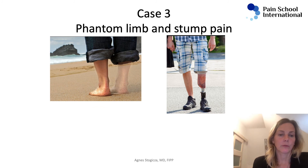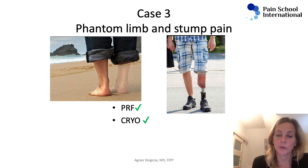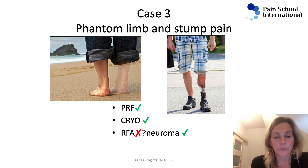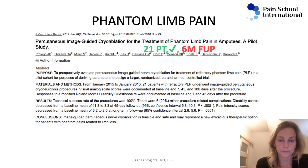When it comes to phantom limb pain and stump pain, the distal portion of the nerve and its function are no longer as relevant. So you could do a lot of things: PRF, but the benefit will probably be short-lived. You could do cryo because you can take away function fully. You would consider radiofrequency, but knowing it can cause complete coagulation of the nerve and possible neuroma formation, I would opt for cryo. This is a case series of 21 patients with six months follow-up that showed benefit.